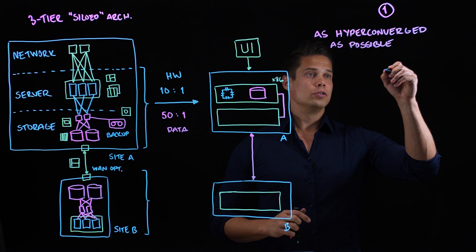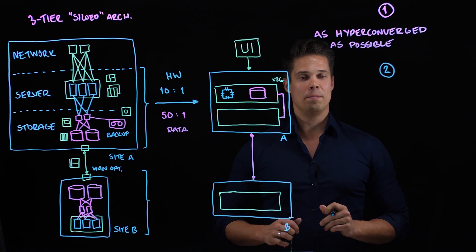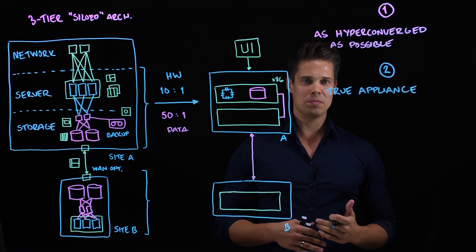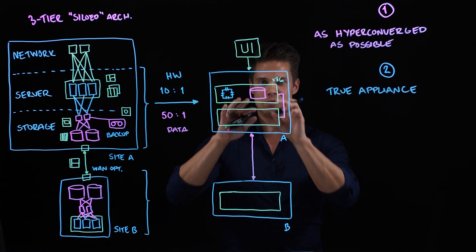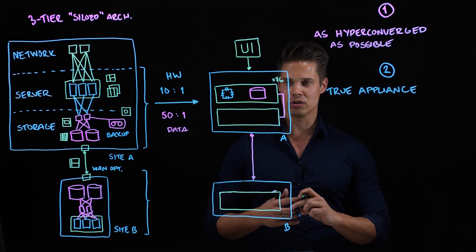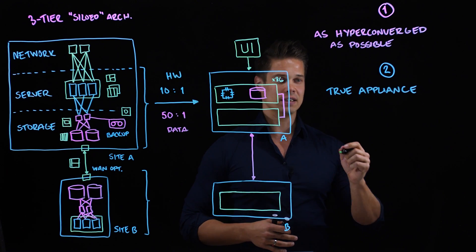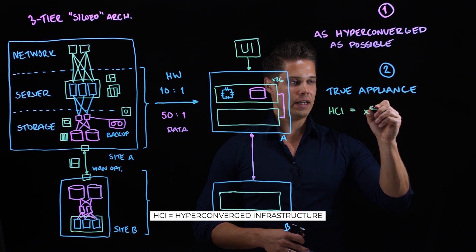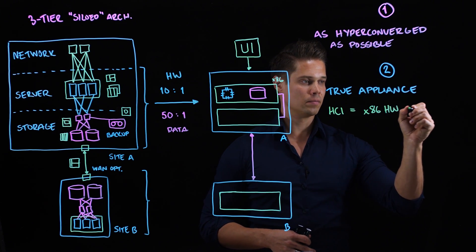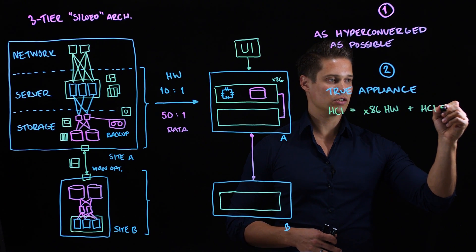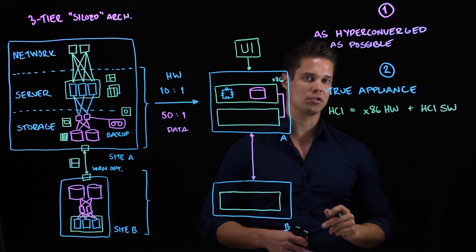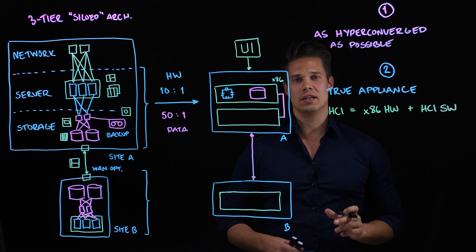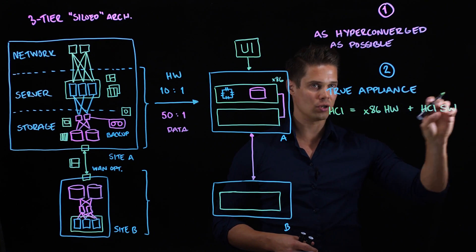So, that's number one. Number two. Make sure that your solution is a true appliance. What I mean by this true appliance is that if we take a look what this hyperconvergence node, this appliance actually is. So, HCI is x86 hardware plus HCI software, hyperconverged infrastructure software. So, we have a common off-the-shelf industry standard server with special software.